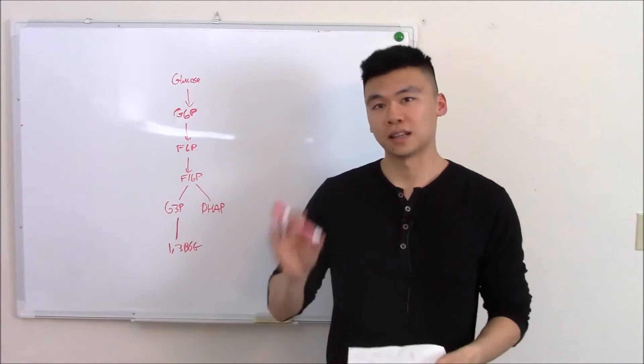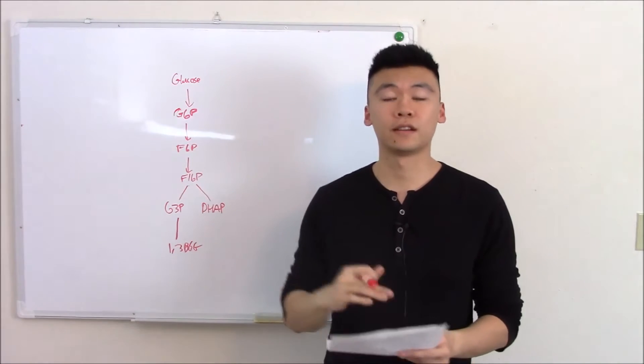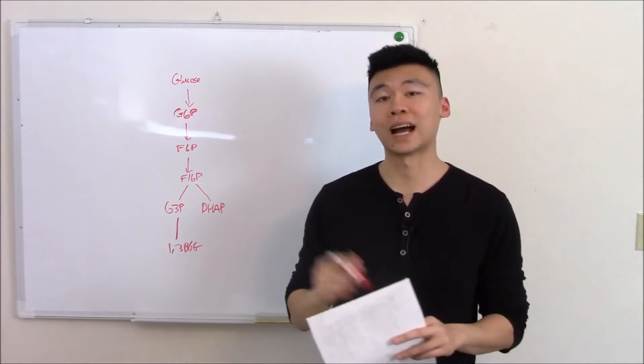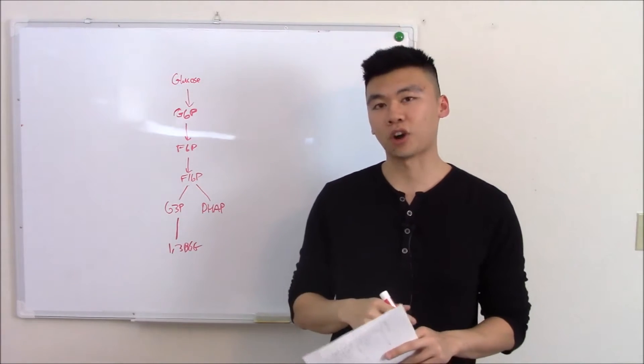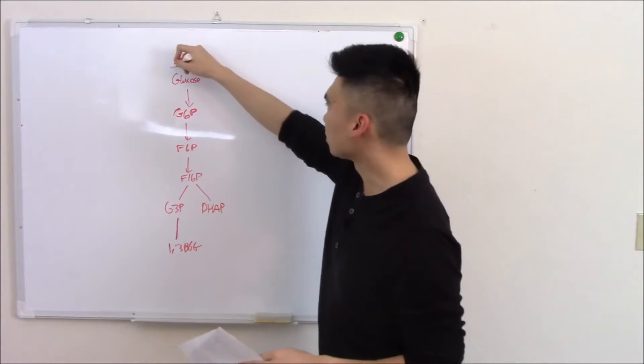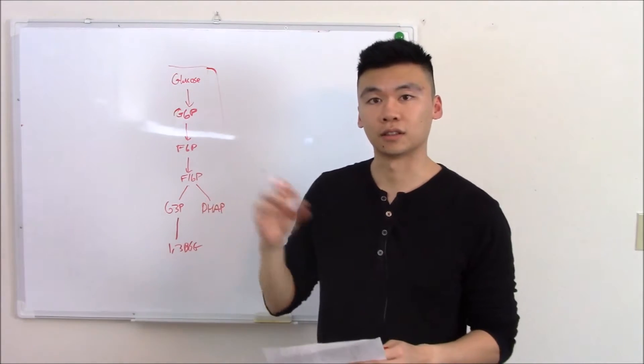So we're all done with glucose and like we said once we're done with glucose we're going to use it as a backbone and see how other things fit in there. This video is going to be all about the other monosaccharides and how that fits into the backbone. This is part of glycolysis. We're going to see how galactose fits in there first.